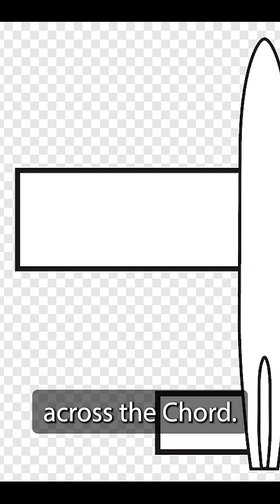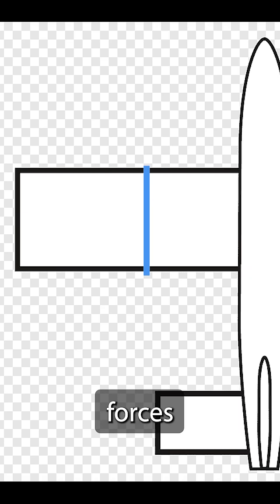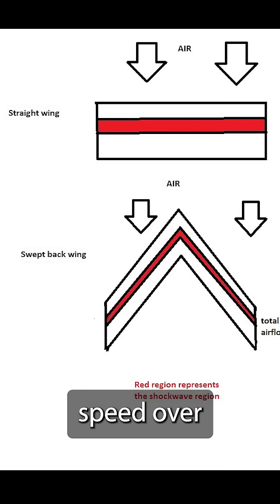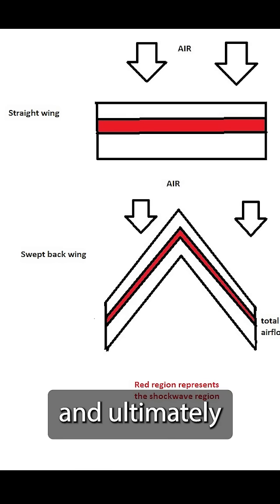The second reason Maverick extended the wings was to increase the airflow across the chord. A zero swept wing forces the relative wind directly across the chord line, producing an increase in wind speed over the wing. This creates a lower pressure and ultimately lift.